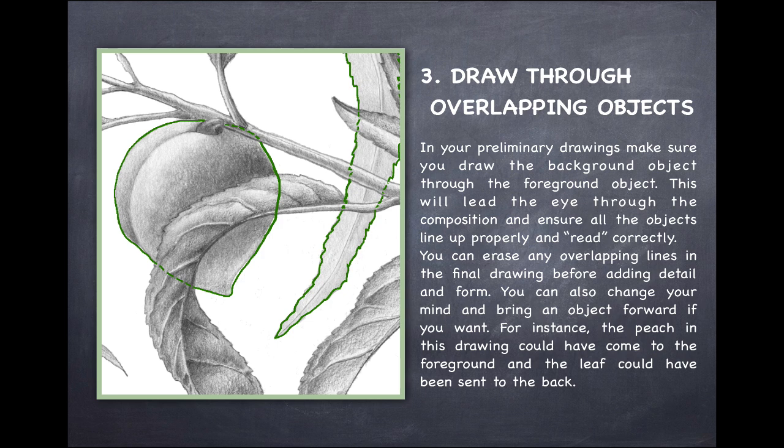Number three, draw through overlapping objects. In your preliminary drawings, and I work on tracing paper, make sure that you draw the background object through the foreground object. This will lead the eye through the composition and ensure all the objects line up properly and read correctly. You can erase any overlapping lines in the final drawing before adding detail and form. You can also change your mind and bring an object forward if you want. For instance, in this drawing here I could have brought the peach forward having the leaf behind. So make sure that when you're drawing that you draw through and then erase anything where it is overlapping.